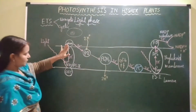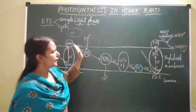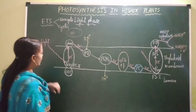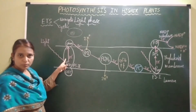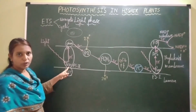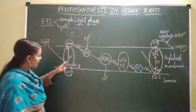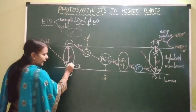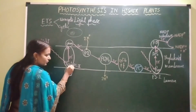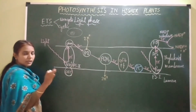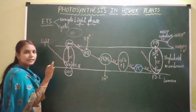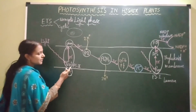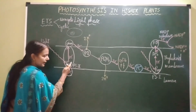In this thylakoid membrane, Photosystem 2 and Photosystem 1 are present, with different electron carriers in between. The reaction center of Photosystem 2, that is Chlorophyll A, after absorption of a light photon, gets excited and electron extrusion occurs. When electrons are extruded from the reaction center of P680 — Photosystem 2 — it is called P680 because it shows absorption maxima at 680 nanometers wavelength of sunlight.